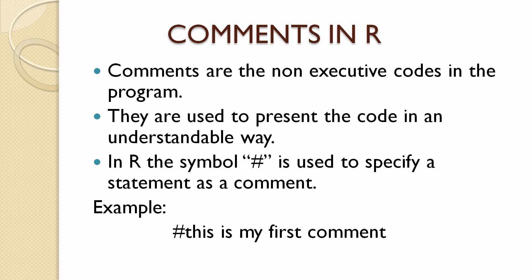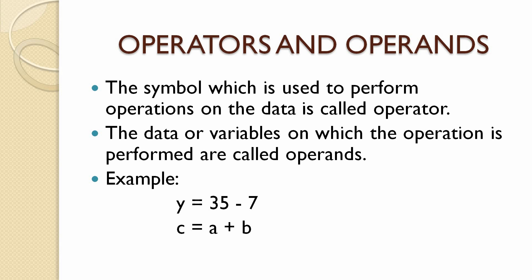Let us revert back to our topic: operators and operands. The symbol which is used to perform an operation on the given data is called an operator. The data or variables on which the operation is being performed are called operands. For example, if we see y equal to 35 minus 7, here the subtraction symbol is called an operator as it performs the operation of subtracting 7 from 35.